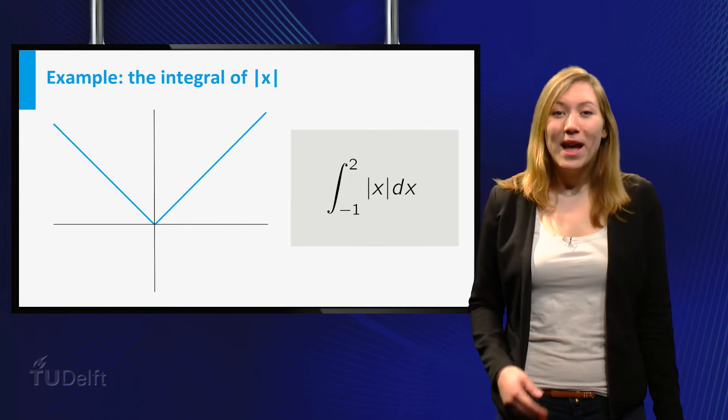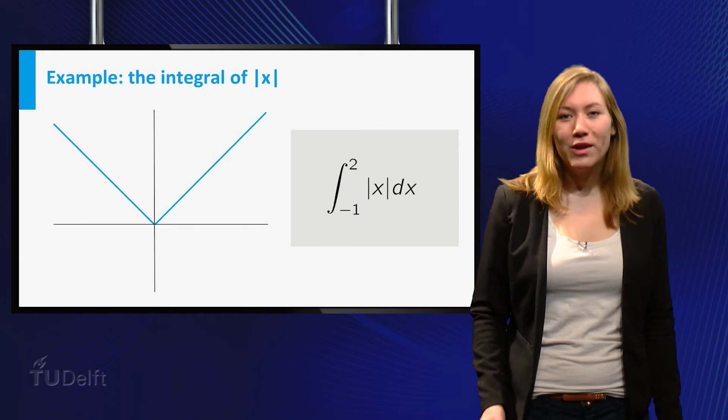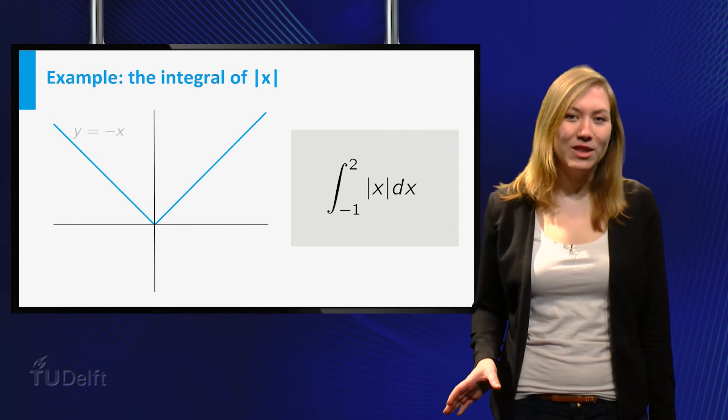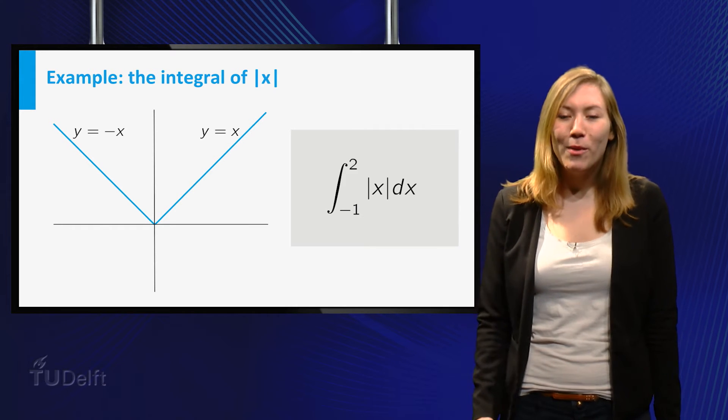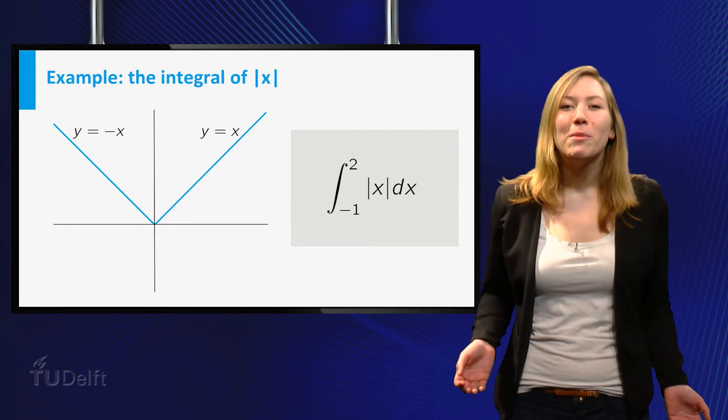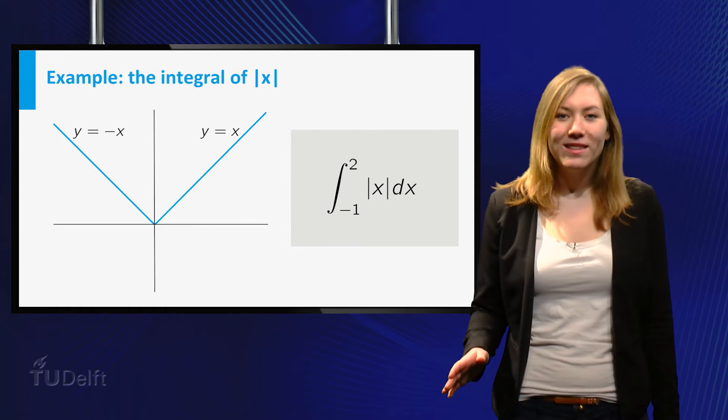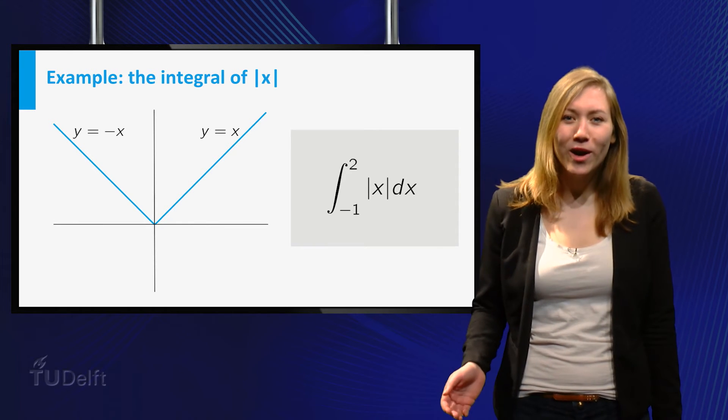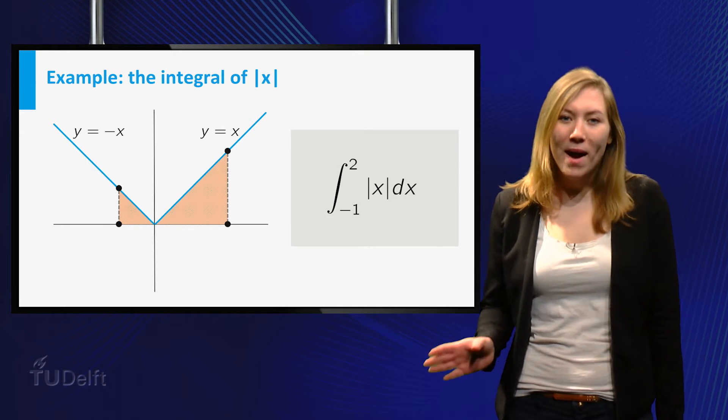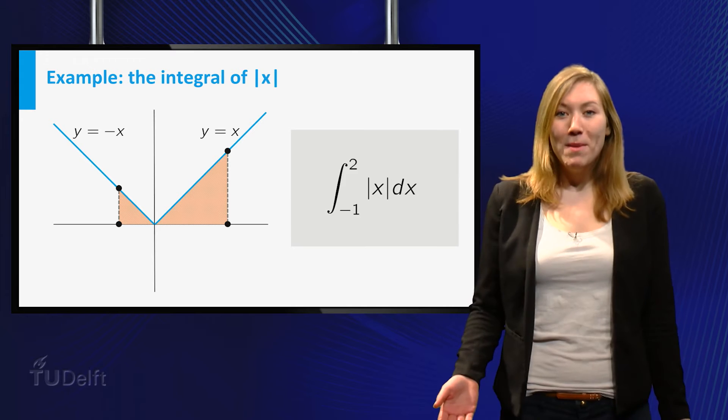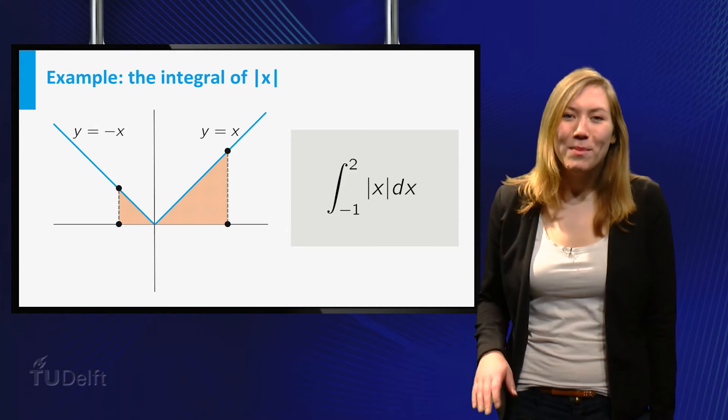As you can see in the graph, the absolute value of x actually has two parts. If x is smaller than zero, then y equals minus x. But if x is larger than zero, then y equals x. So the primitive function of the absolute value of x is different depending on where you are in the interval. This makes calculating the integral from minus 1 to 2 a little bit harder. But maybe one of the properties you just saw can help us.